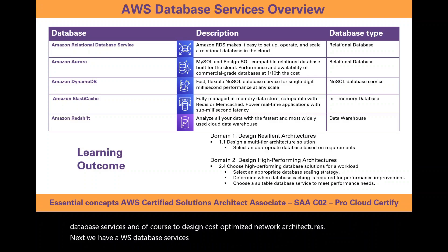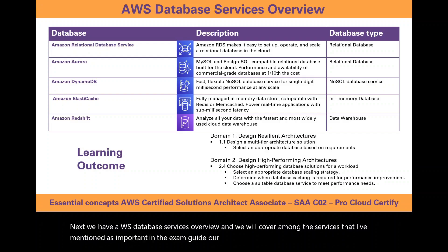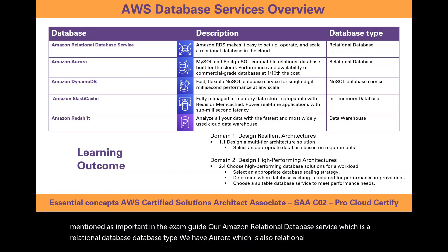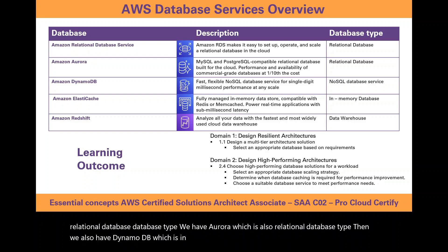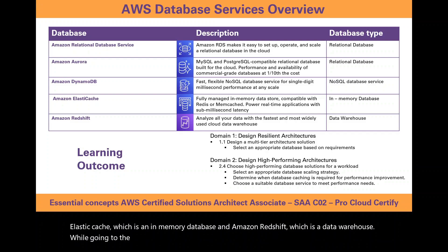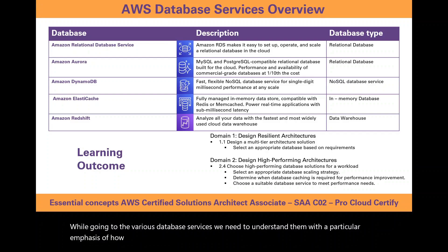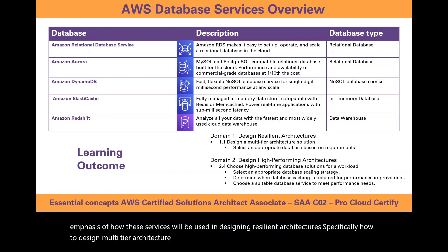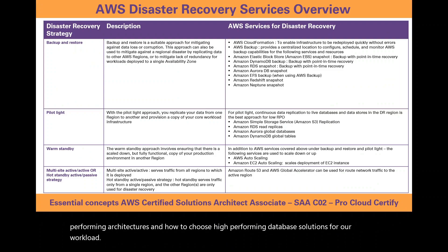For AWS database services, we will cover Amazon Relational Database Service (RDS), Aurora (also relational), DynamoDB (NoSQL), ElastiCache (in-memory), and Amazon Redshift (data warehouse). These services need to be understood with emphasis on designing resilient multi-tier architecture solutions and designing high-performing architectures — specifically how to choose high-performing database solutions for a workload.